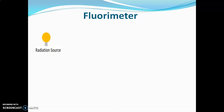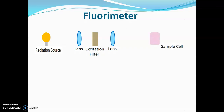A fluorimeter consists of a radiation source which emits radiations. Next is a collimating convex lens which collects the radiations emitted by the source and focuses it towards the excitation filter. The excitation filter absorbs visible radiations and only UV radiations are allowed to pass. Next is a focusing lens which focuses the UV radiations towards the sample cell, which holds the sample.